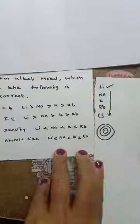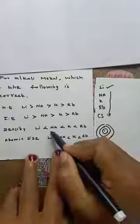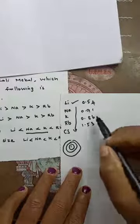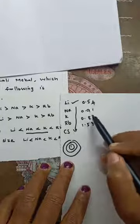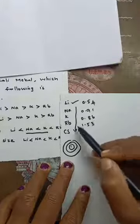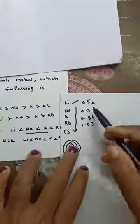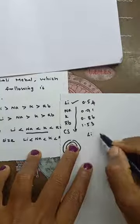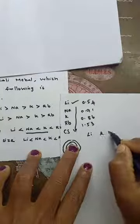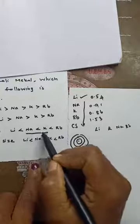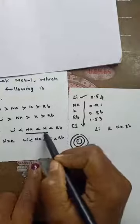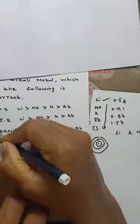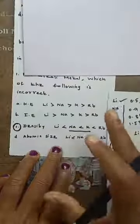Now take the density option. The densities are: lithium 0.54, sodium 0.91, potassium 0.86, rubidium 1.53. Note that potassium and sodium are exceptions. So the correct density order is: lithium, potassium, sodium, rubidium. But in the question, the order given is lithium, sodium, potassium, rubidium, which is not correct. So the correct answer is option C - density. The remaining options are all given in the correct order.